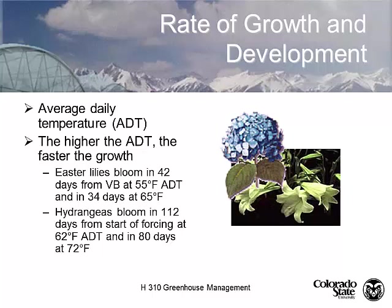Hydrangeas show the same pattern: 112 days from start of forcing at 62 degrees average daily temperature, and 80 days at 72 degrees. This is a fine line of managing your greenhouse, and we can use this specifically in Easter lilies to manage our target date for generating a crop.